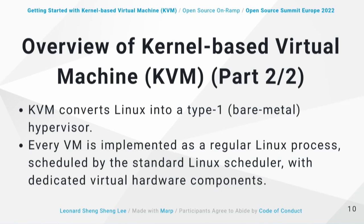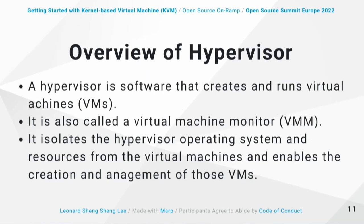KVM converts Linux into a type 1 hypervisor — a bare metal hypervisor. Each VM is implemented as a regular Linux process scheduled by the standard Linux scheduler, with dedicated virtual hardware such as network cards, graphic adapters, CPU, memory, and disk.